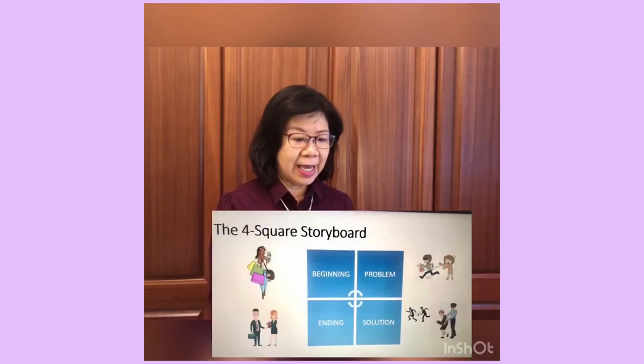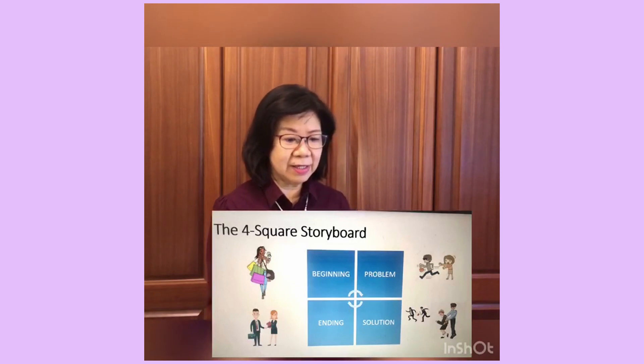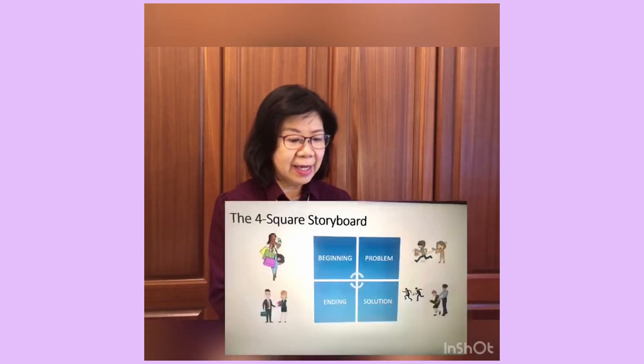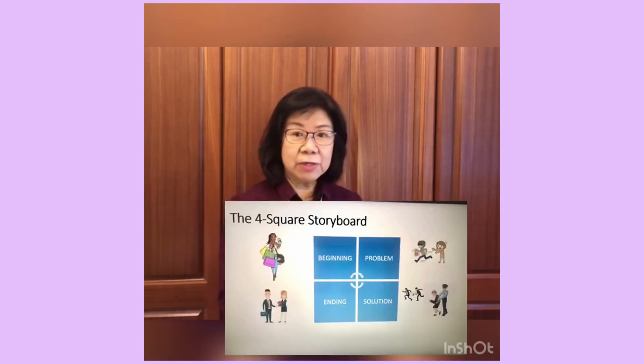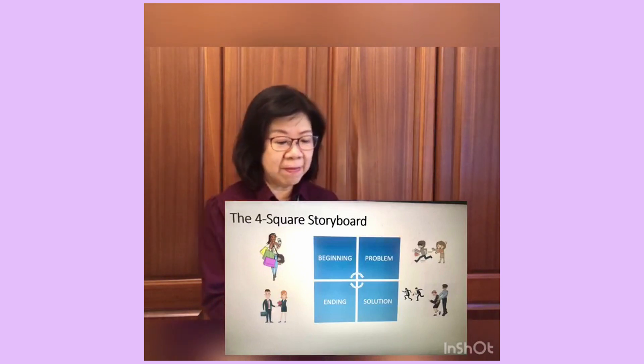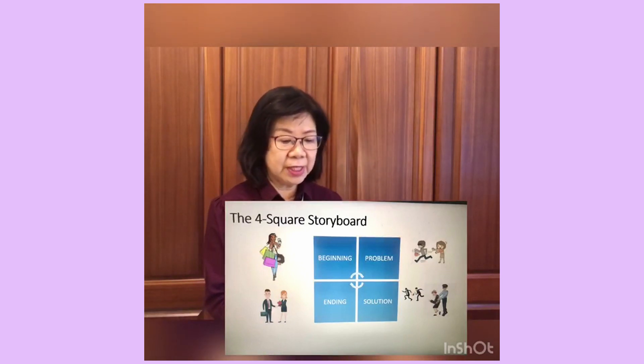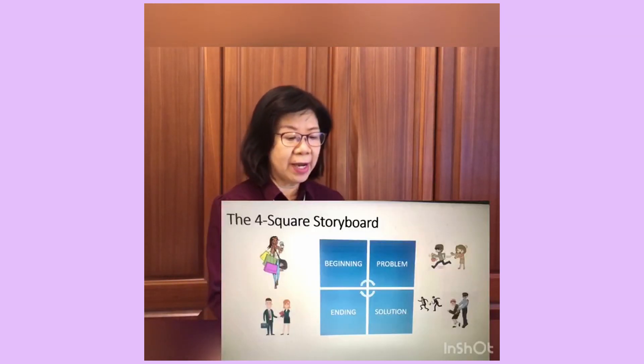If you put it together using the four square storyboard, it would look like this. It has a beginning, it has a problem — you can see that Susan lost her handbag — and there is also a solution where someone came to help Susan, and then you have the ending where Susan thanked and praised someone.